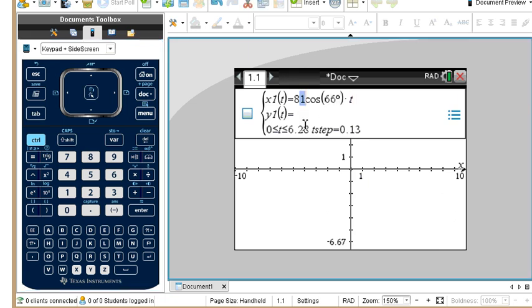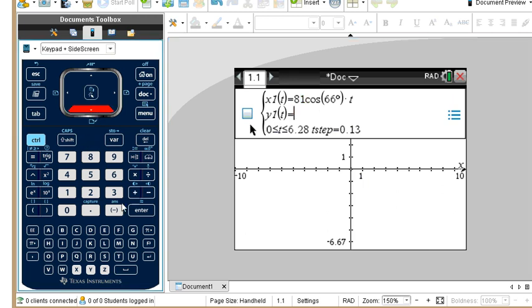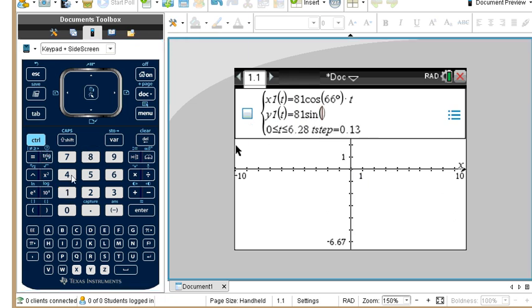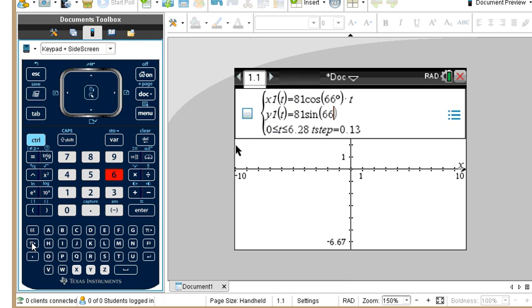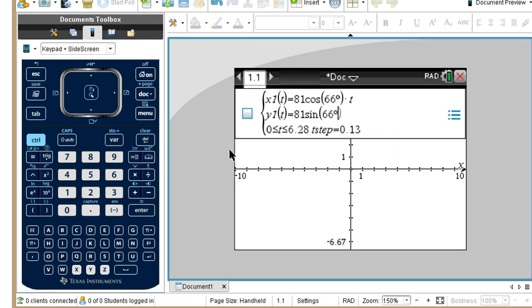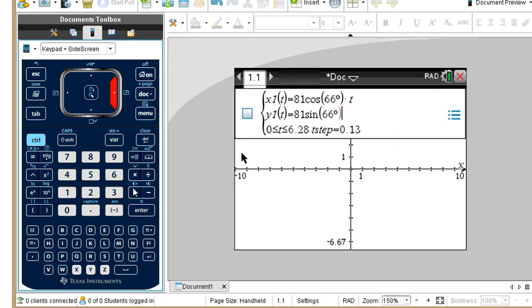Then you come down here to the next one, we're going to have the same thing, but 81, in this case sine 66, again our degree symbol, and we have t, and minus 16t squared.